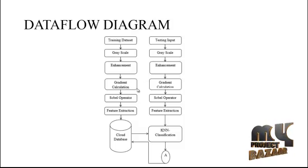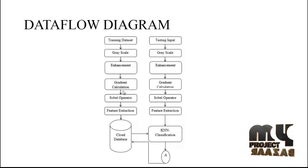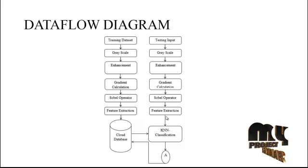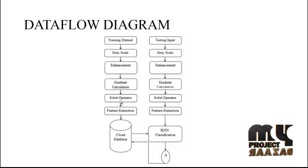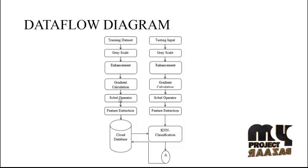After enhancement, gradient calculation is performed. In the gradient calculation, RGB values are extracted, measuring the red, blue, and gray values from the affected leaf. The Sobel operator is then applied, which measures the related gradient values and removes the RGB values.